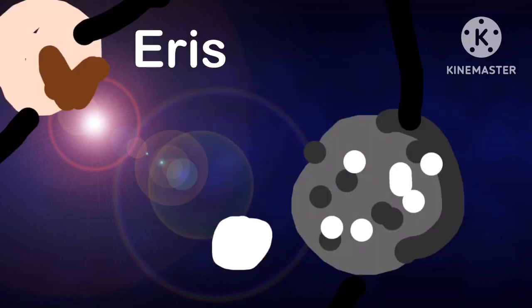I'm Eris. I'm the tenth planet in the solar system and the fifth dwarf planet. I have a moon called Dysnomia and a strange orbit.